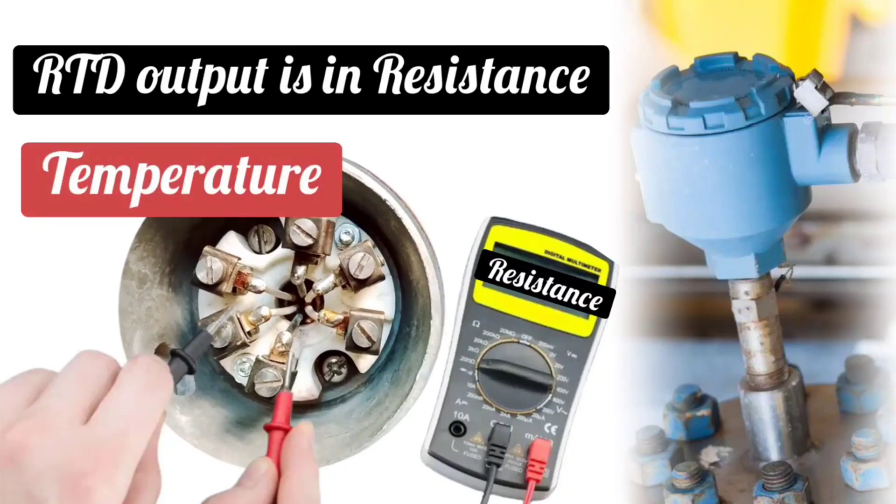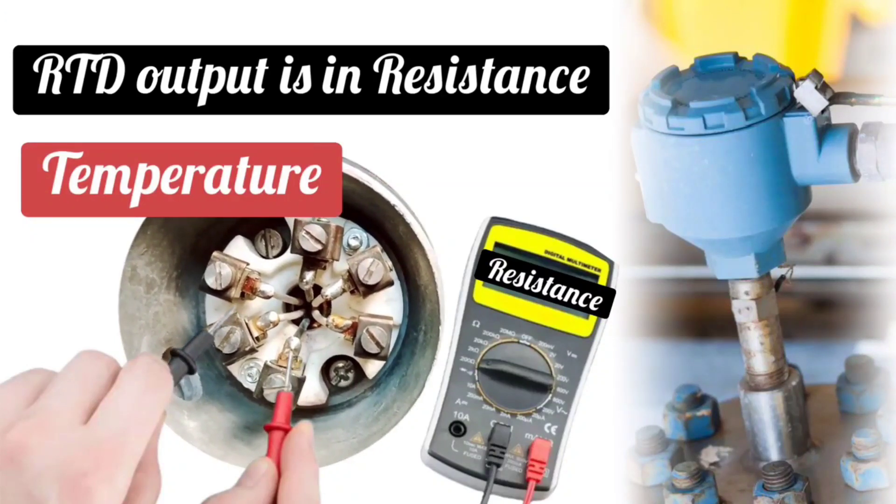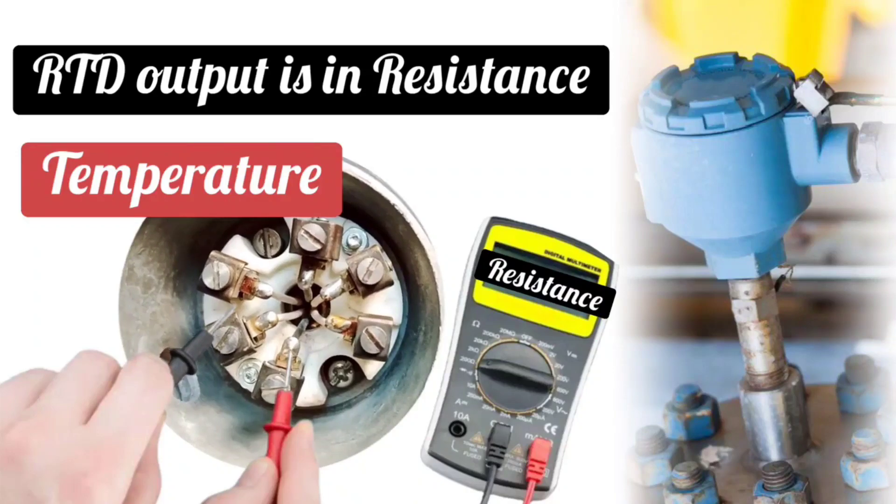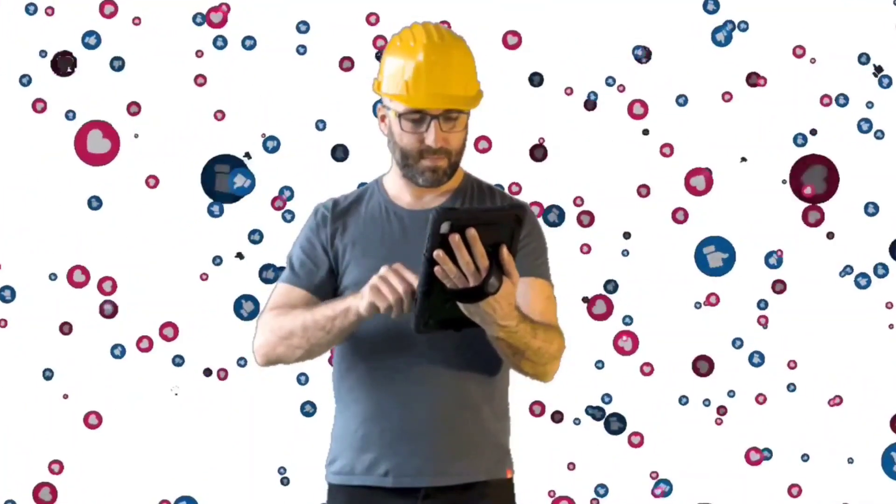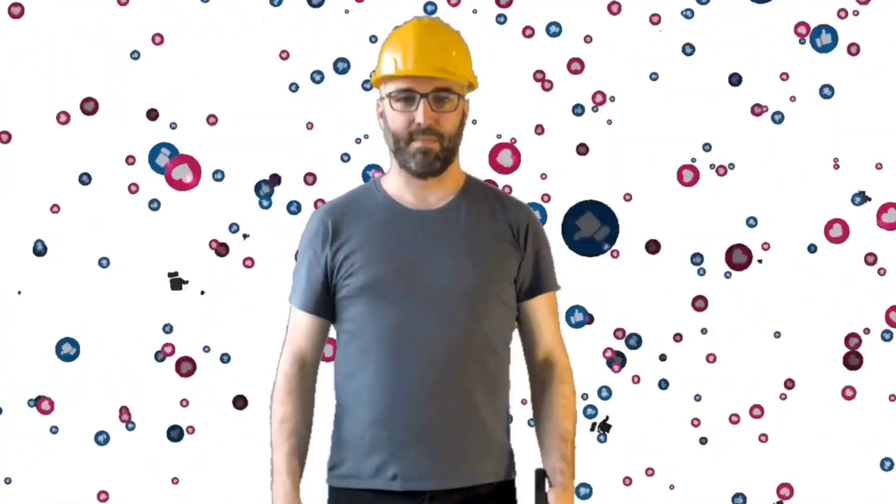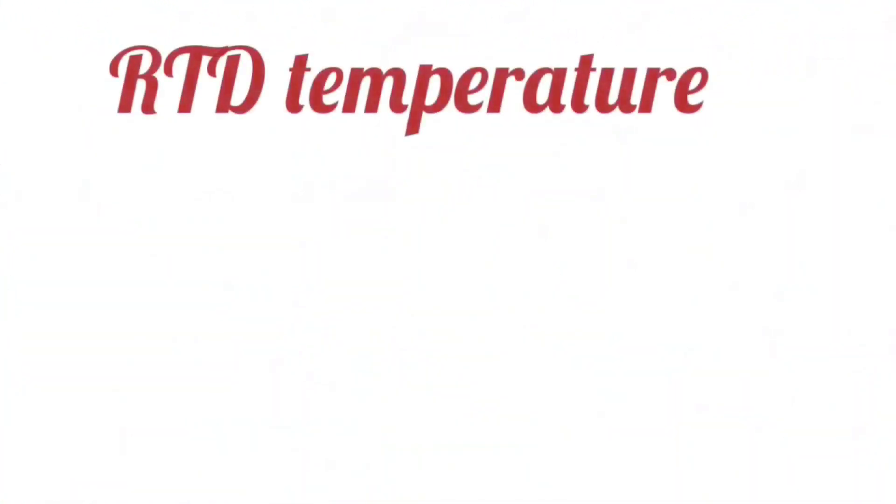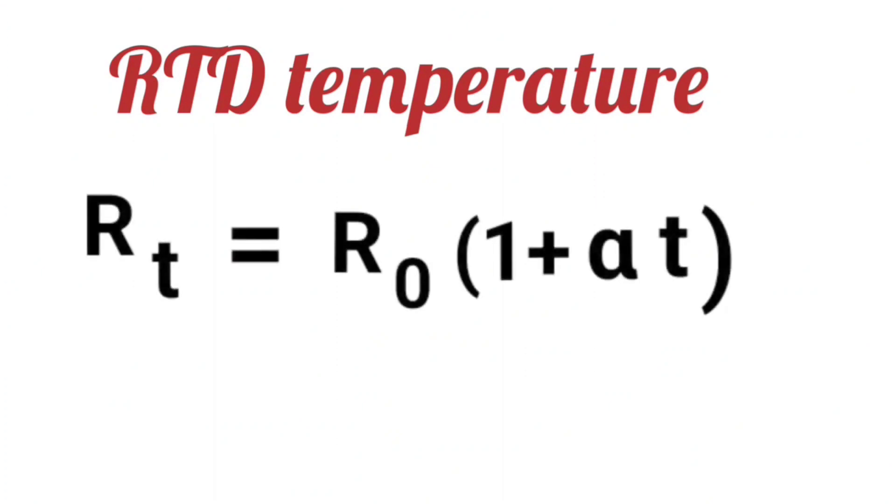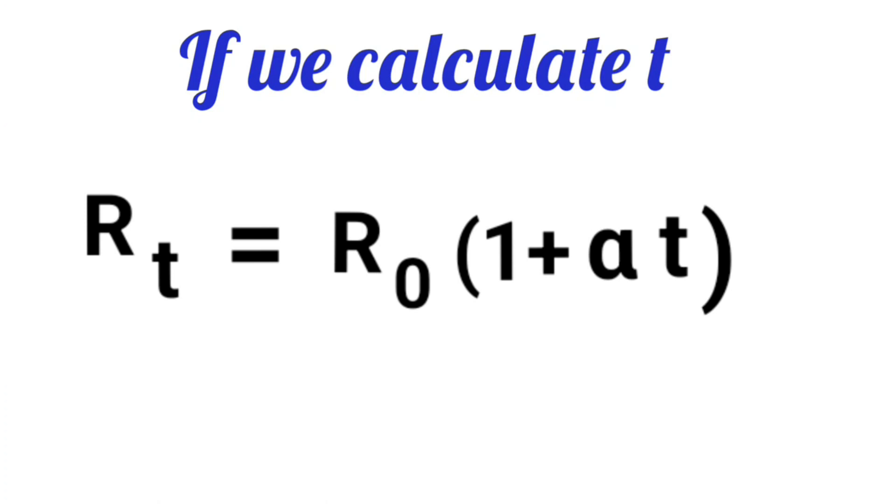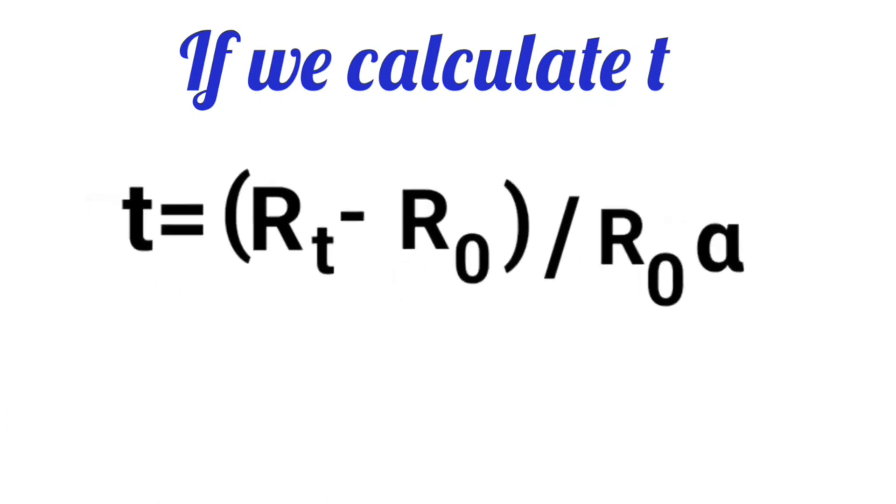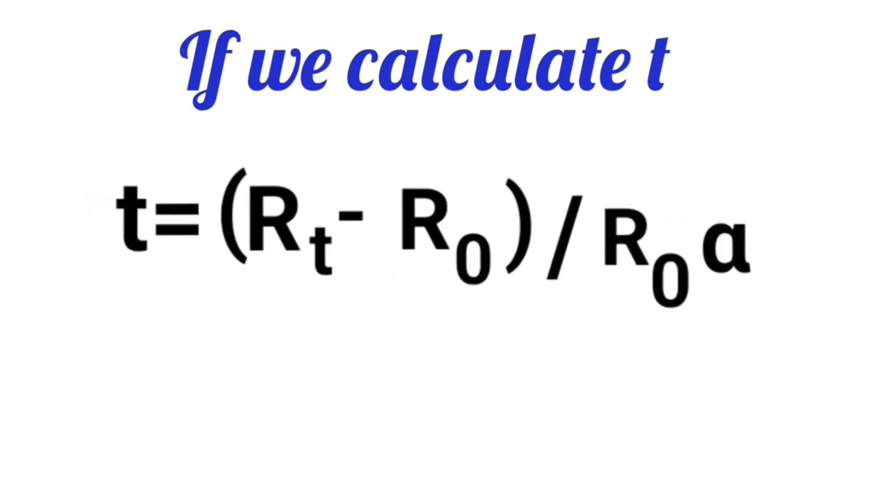Today we will see how the temperature of RTD is calculated from this resistance. Today I am going to tell such a trick by which you can take out the temperature of RTD in a pinch. Well friends, the temperature calculation formula of RTD is RT equals R0(1 plus alpha T). If T means temperature is calculated from here, then it will become T equals (RT minus R0) divided by (R0 alpha).